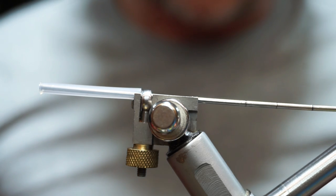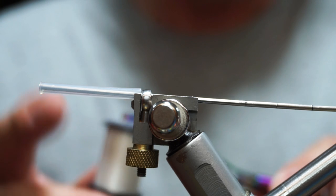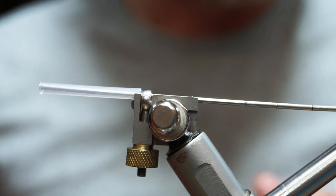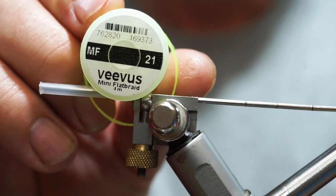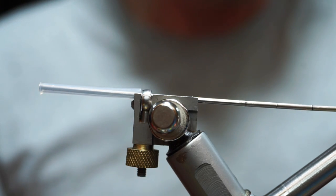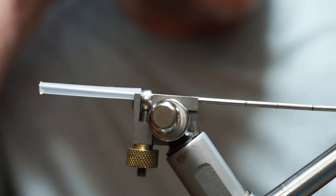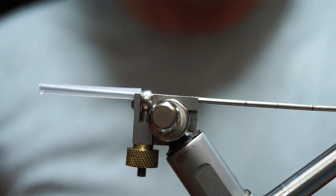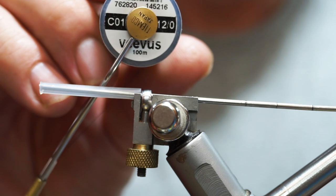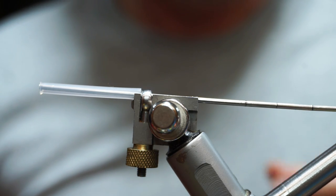I'm going to use two different threads for this fly. The first one is this Vivas 12-0 white, and the reason for that is the body is going to be this Vivas mini flat braid and I don't want black thread to show from underneath it. I want it to be nice and bright. To finish the fly off we're going to be using the Vivas 12-0 in black.